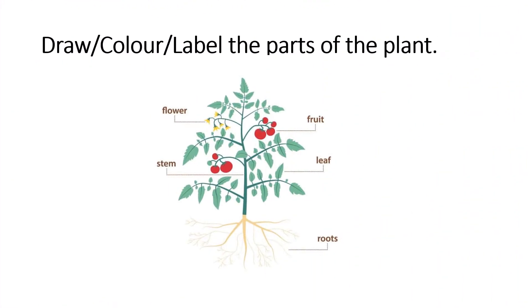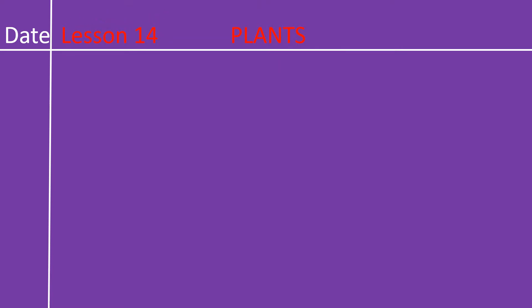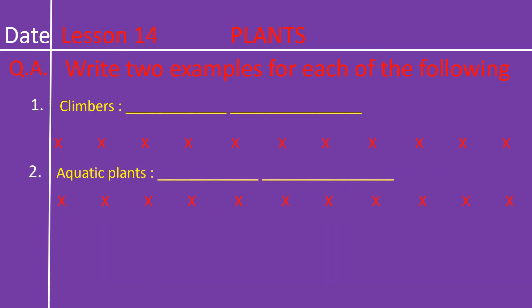Now children, let us do written work. On the blank page you are going to draw, color, and label the parts of the plant as shown in the sample. On the next page, write the date. Write lesson 14, topic: plants. Question A — write two examples for each of the following: number one, climbers; number two, aquatic plants; number three, plants on land.